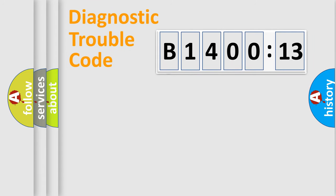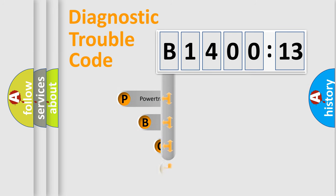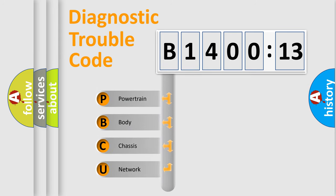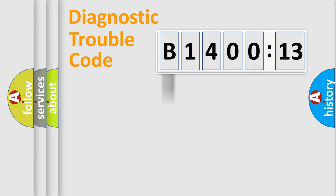Let's do this. First, let's look at the history of diagnostic fault code composition according to the OBD2 protocol, which is unified for all automakers since 2000. We divide the electric system of automobile into four basic units: Powertrain, Body, Chassis, and Network.